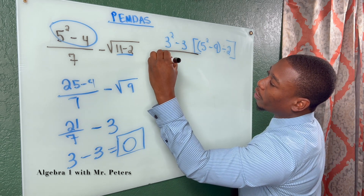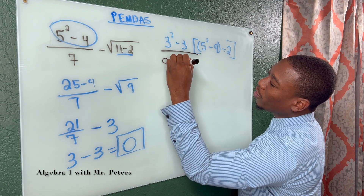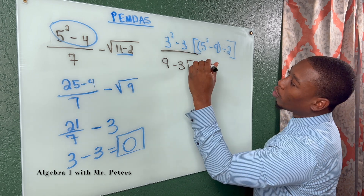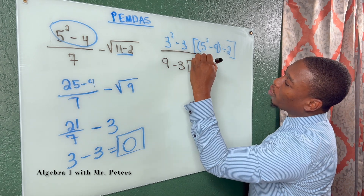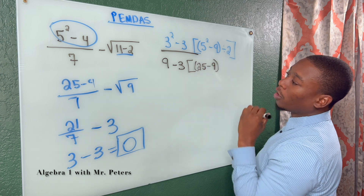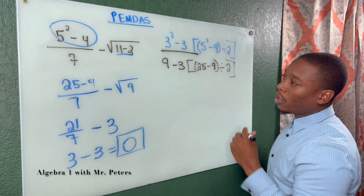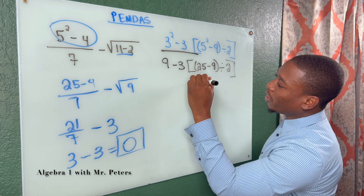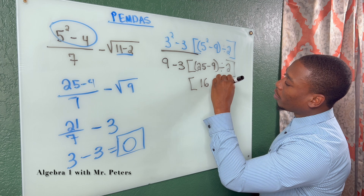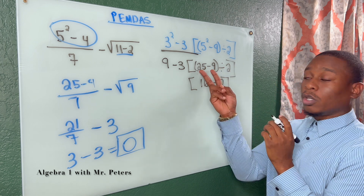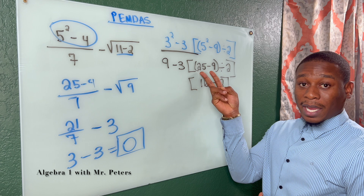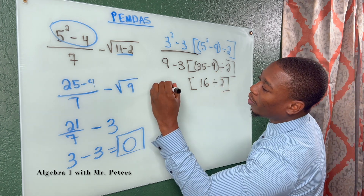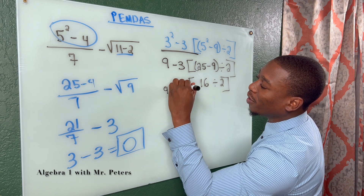After I take care of my exponent, I'm going to have 9 minus 3. Then we're going to start inside the brackets, focusing on the inner parenthesis. We'll have 25 minus 9, close the parenthesis, divide by 2. Now we're still inside the parenthesis — we're going to substitute, so we'll have 16. Let's bring the bracket down, divide by 2, because we already took care of the first operation inside the parenthesis. Now we're moving to the outer, and we'll rewrite the rest of the problem: 9 minus 3.